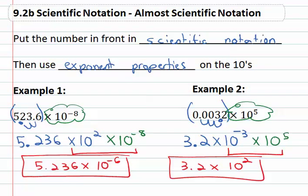So if we end up with a number that's not quite in the correct scientific notation, we simply put the number in front in scientific notation and then use exponent properties on the ten.